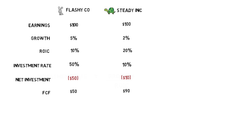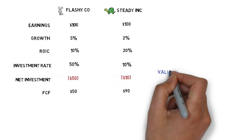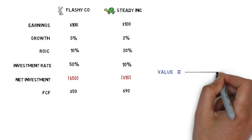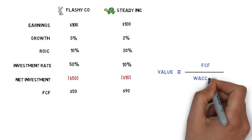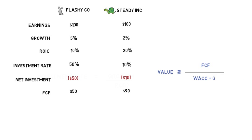If we assume that growth and return on invested capital remain constant, we can use the well-established formula for valuing a growing perpetuity, which is: value equals the free cash flow in year one divided by the weighted average cost of capital (WACC) minus the growth rate. In this example, let's assume a WACC of 10% for each company.